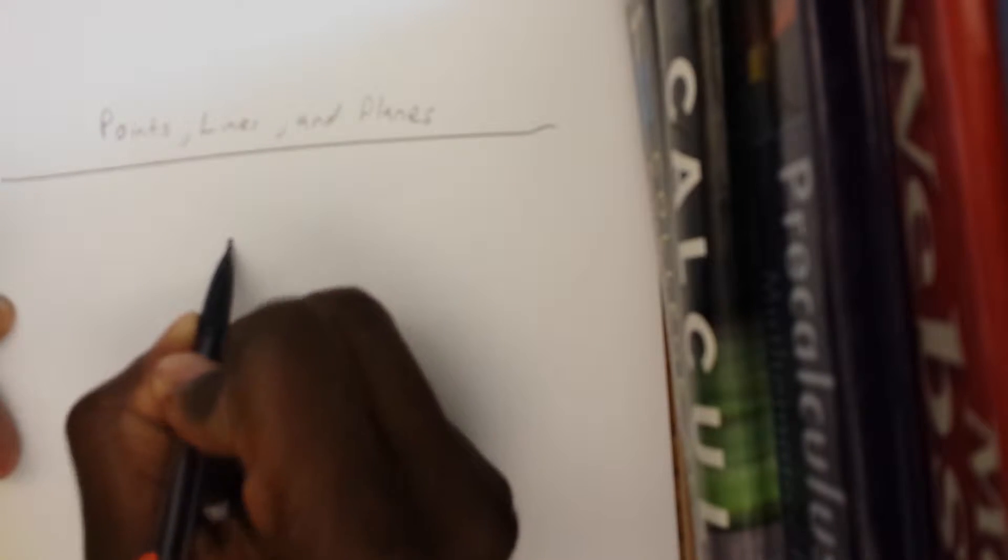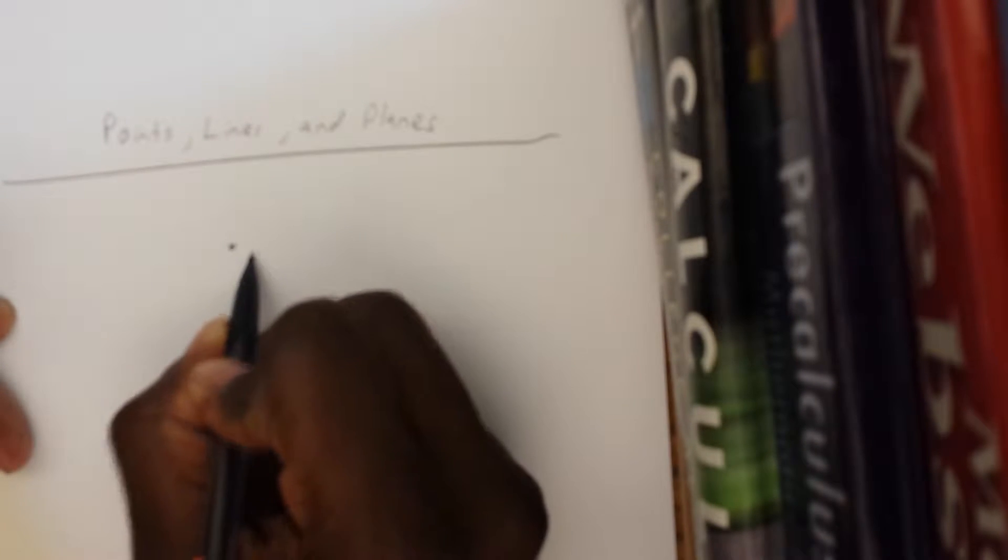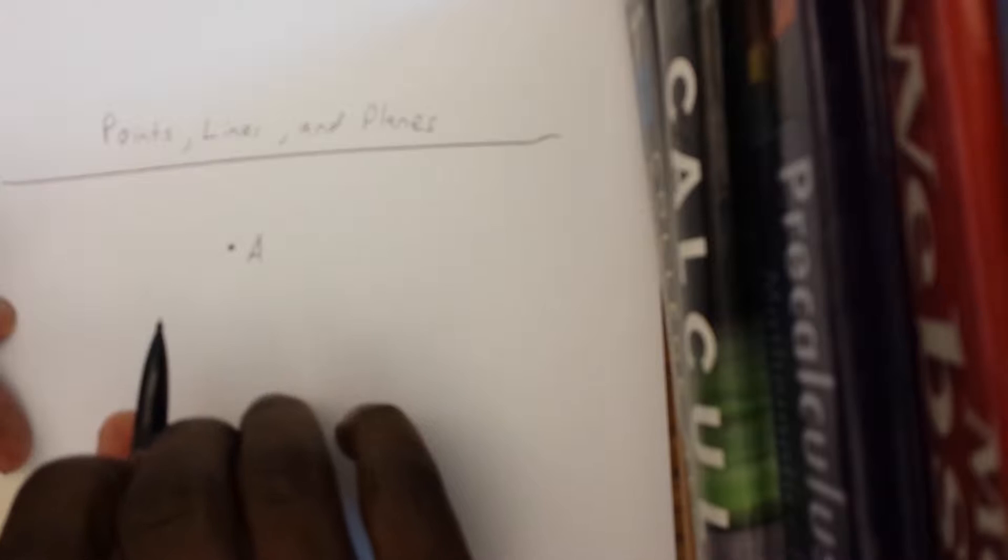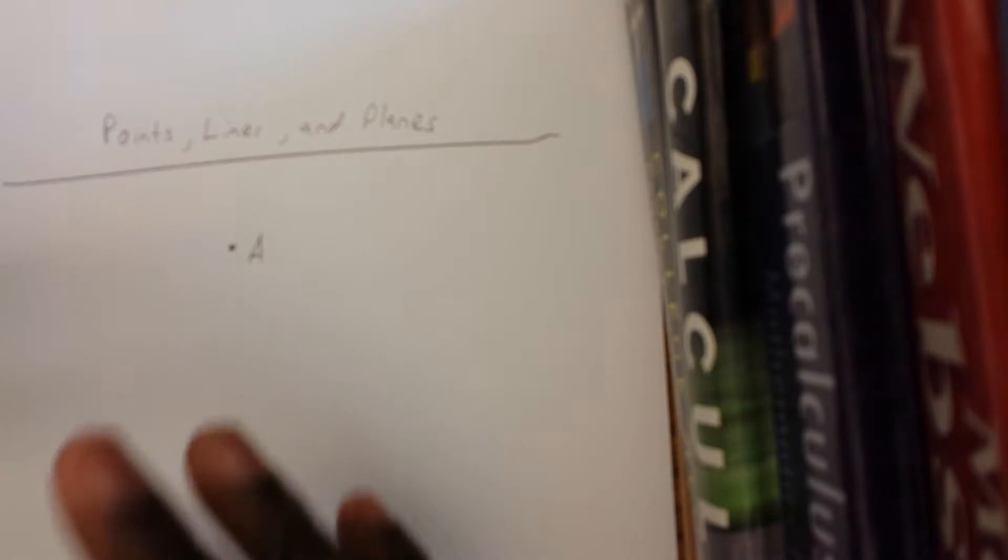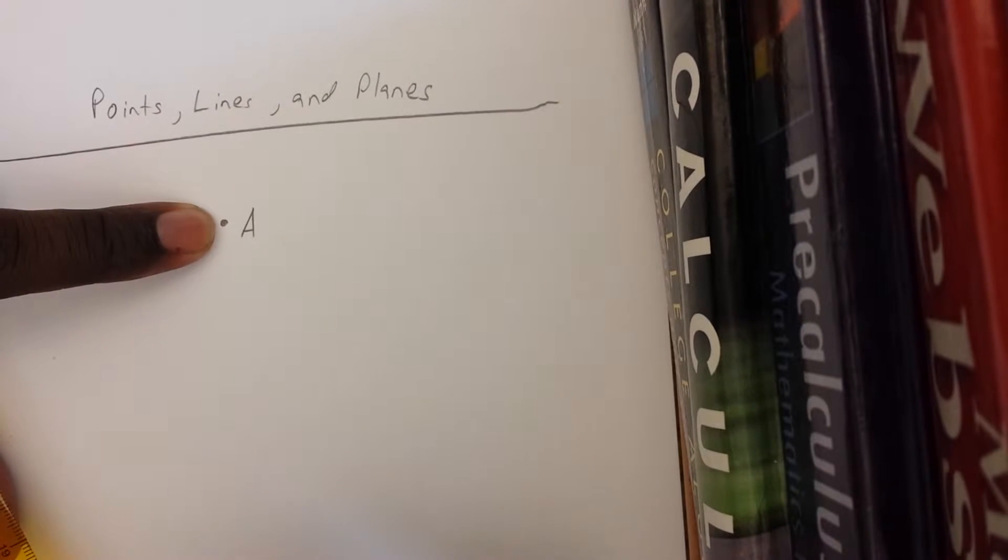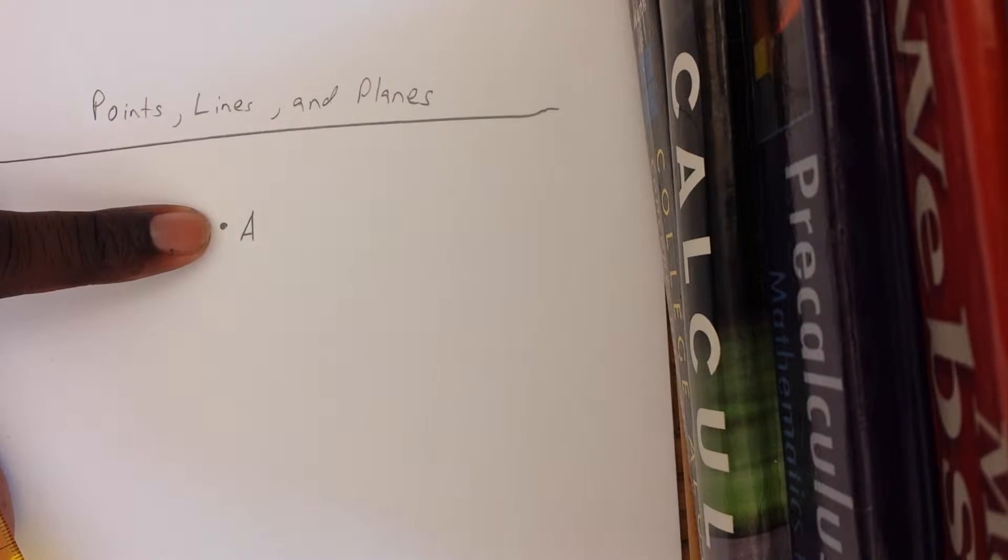Basically, a point is represented by a capital letter. It could be A, it could be B, it could be C, and so forth. A point has no size, so even though I drew it and it looks this big, it really has no size whatsoever. It can be smaller than that. It has no real size.